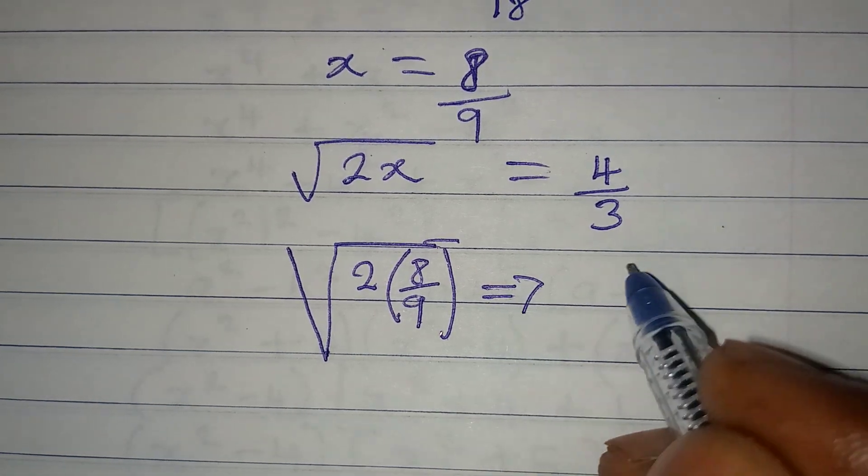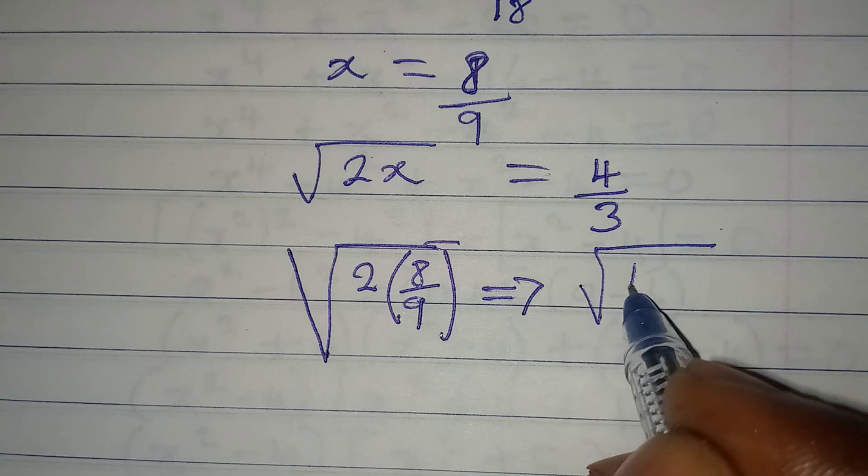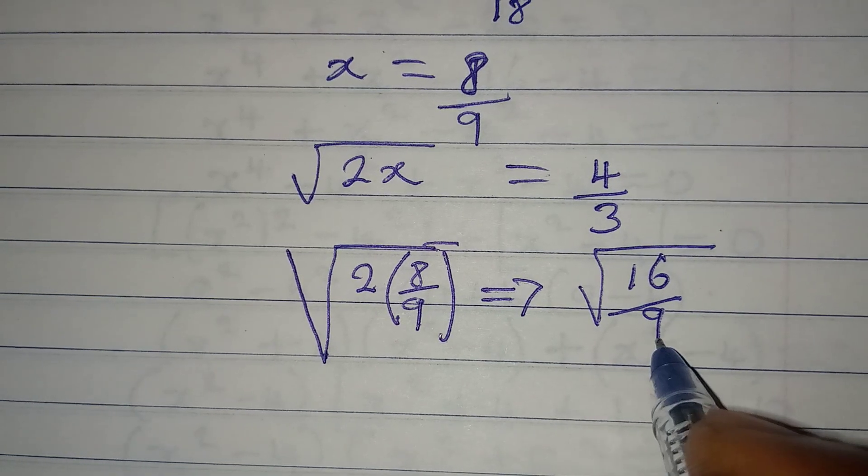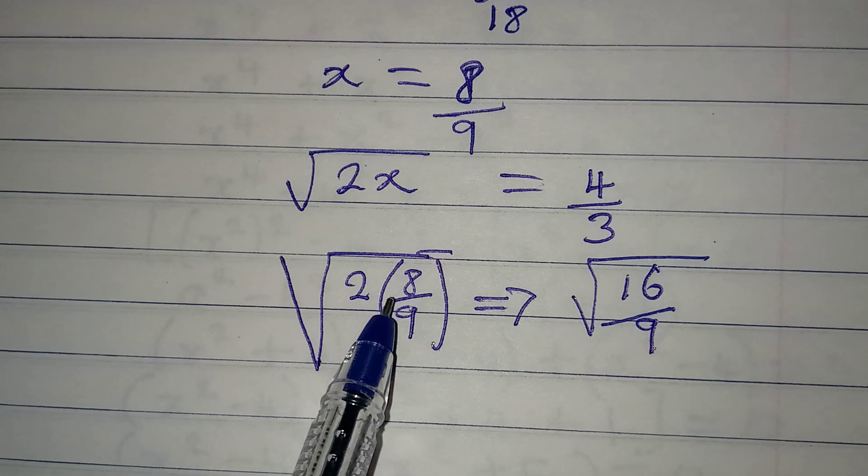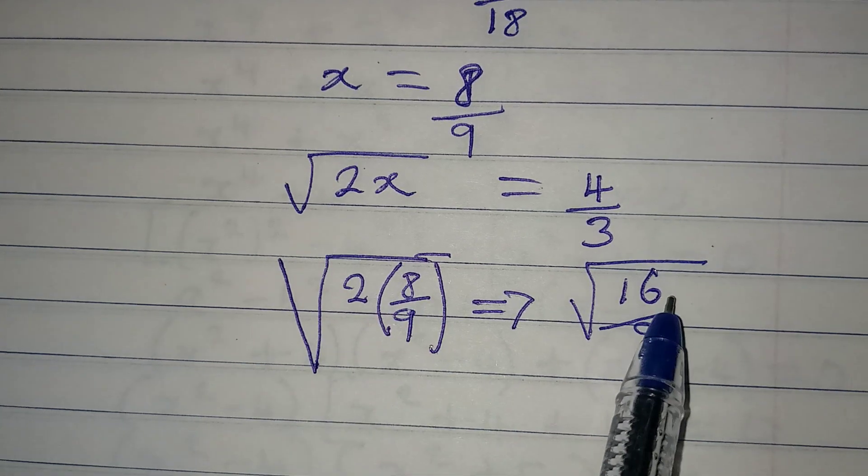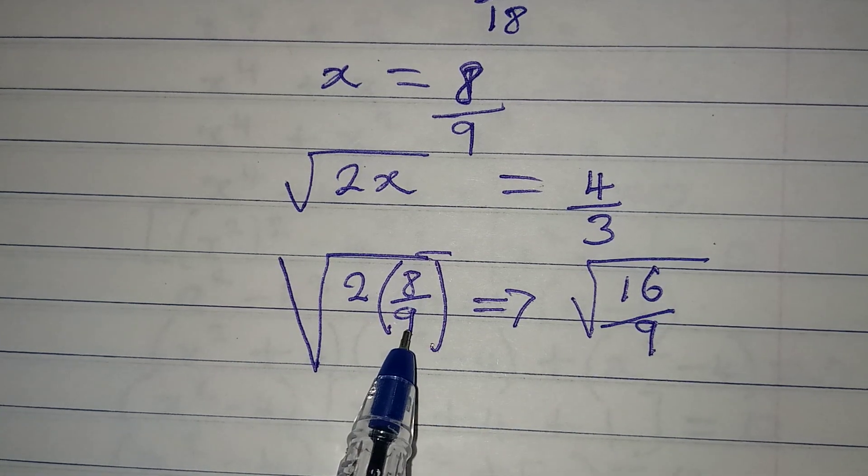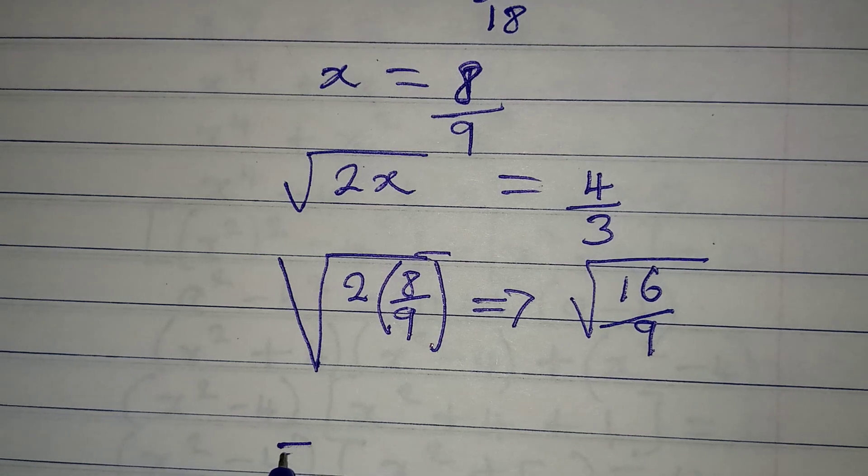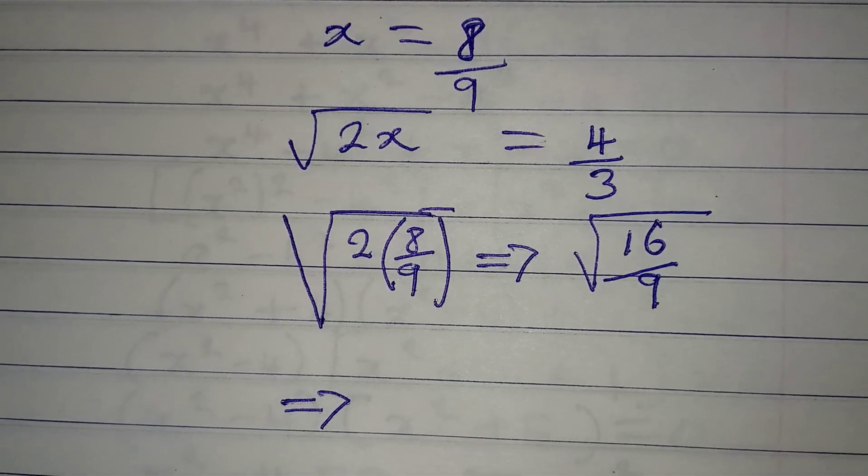This right here will give us square root of 16 over 9, because if you multiply, it will be 2 times 8, which gives us 16, and the 9 comes from the denominator. Square root of 16 will be 4, and square root of 9 is 3.